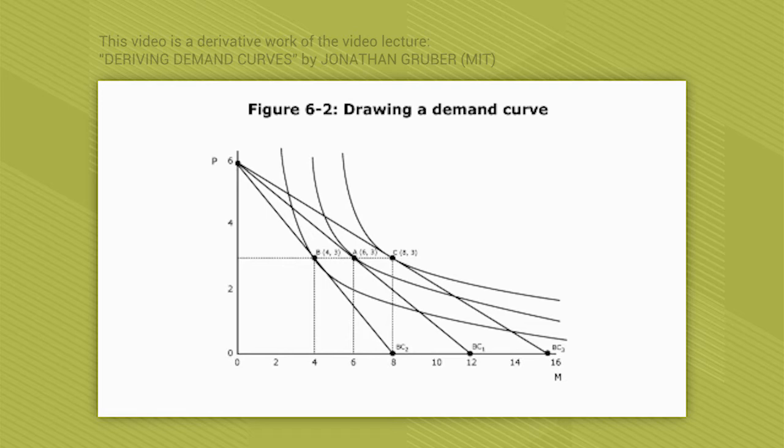The slope, instead of being minus a half, is now minus three quarters. And given the preference I wrote, u equals square root of p times m, you should be able to show yourself that you'd now choose a point like B, where you have three pizzas but now only four movies. So you reduce the number of movies, you keep the number of pizzas constant.